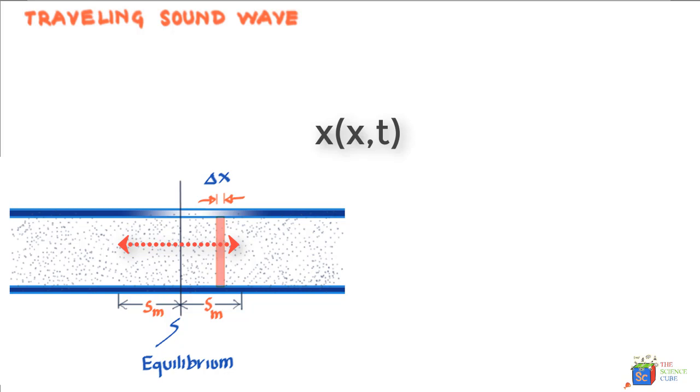But we know that here, this x represents a position of particle from the origin, but this x is actually the displacement of a particle about its mean position. So to avoid confusion, we'll put s in place of x here. So displacement of a particle about mean position is s(x,t).